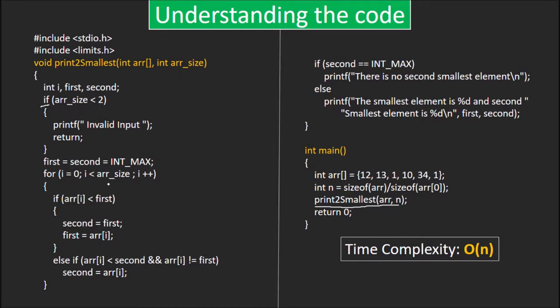Now, we traverse the array and do exactly what we saw in the algorithm. If the element is smaller than first, second becomes first and first becomes the current element. If the element's values lies between that of first and second, we set second equal to the current element.